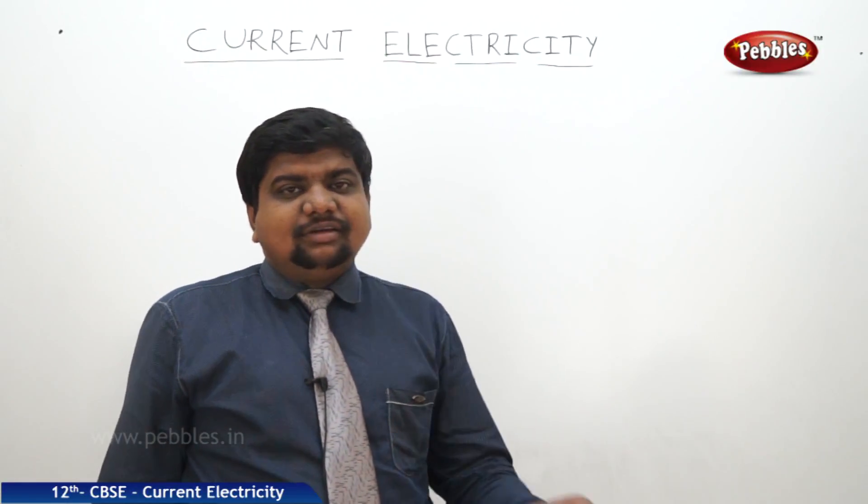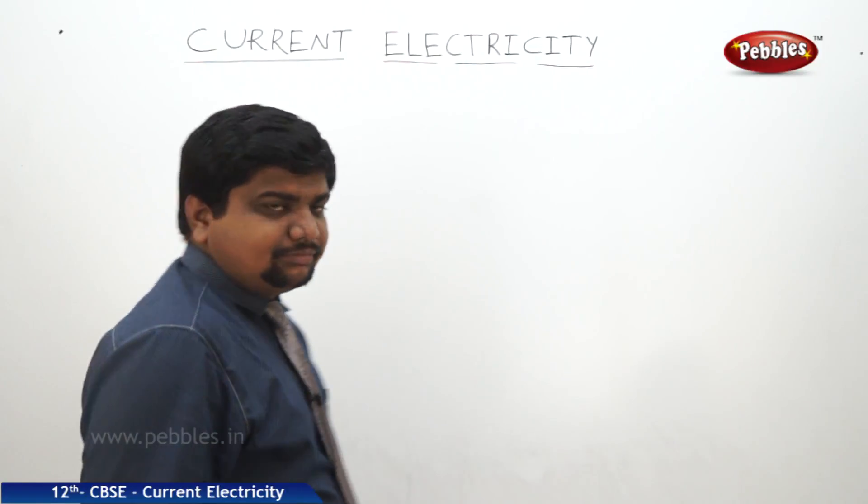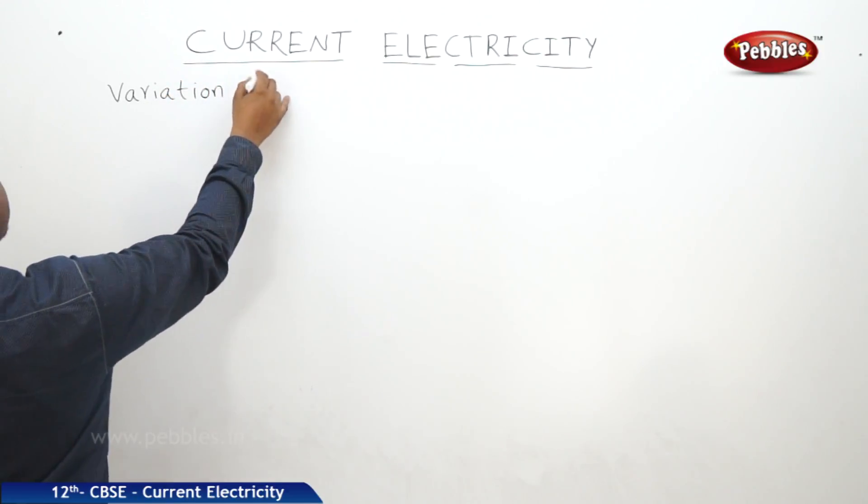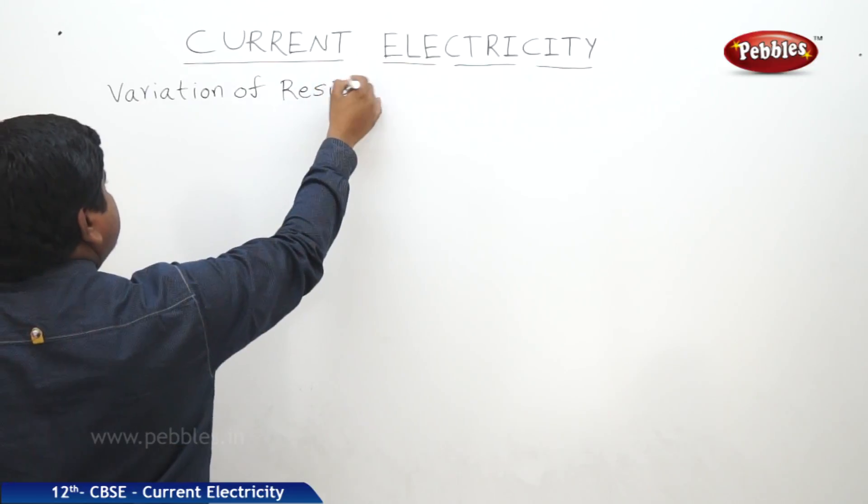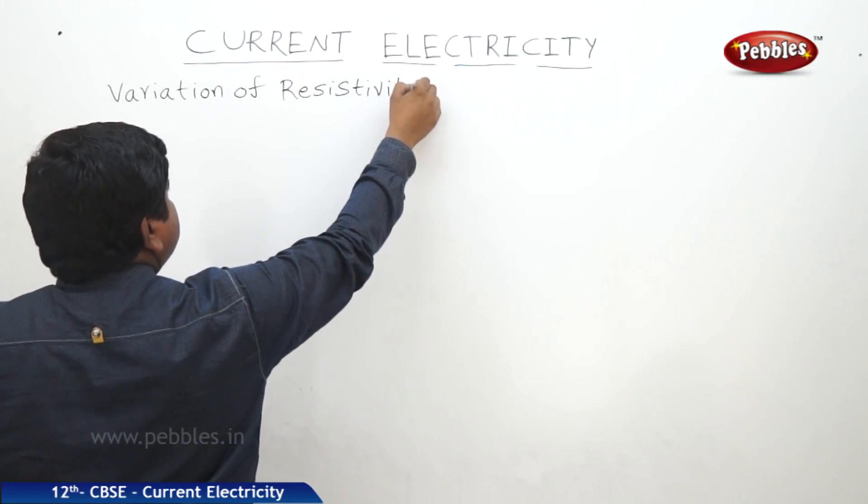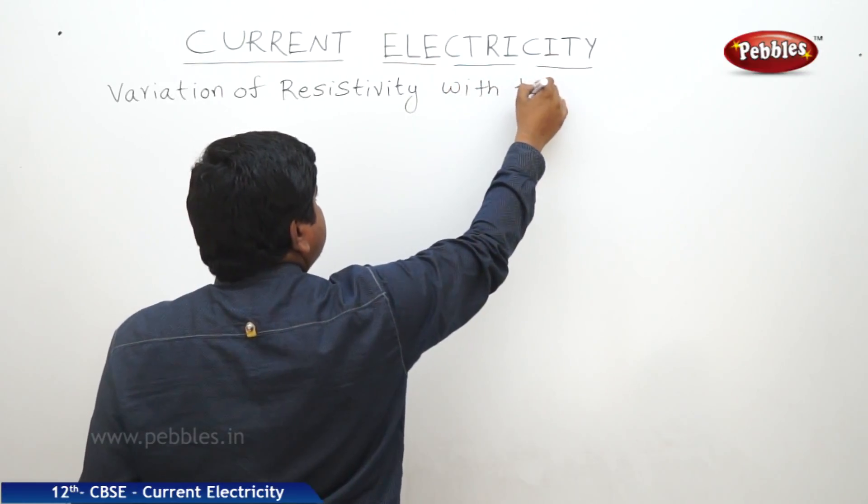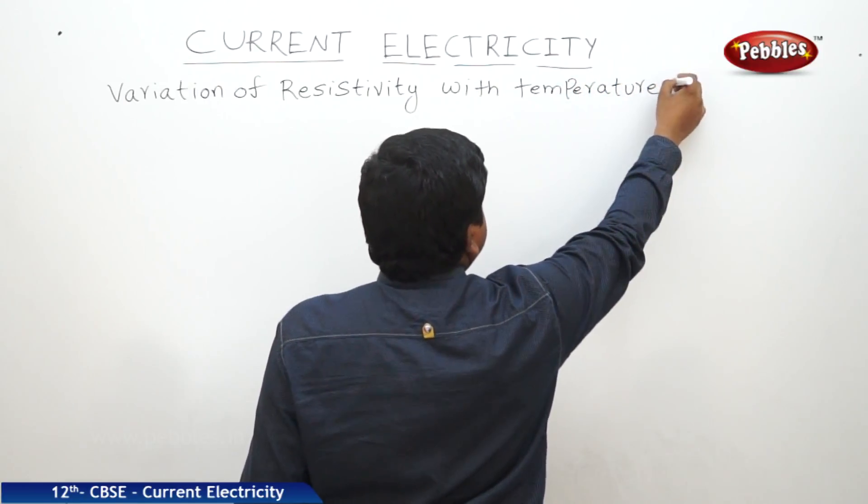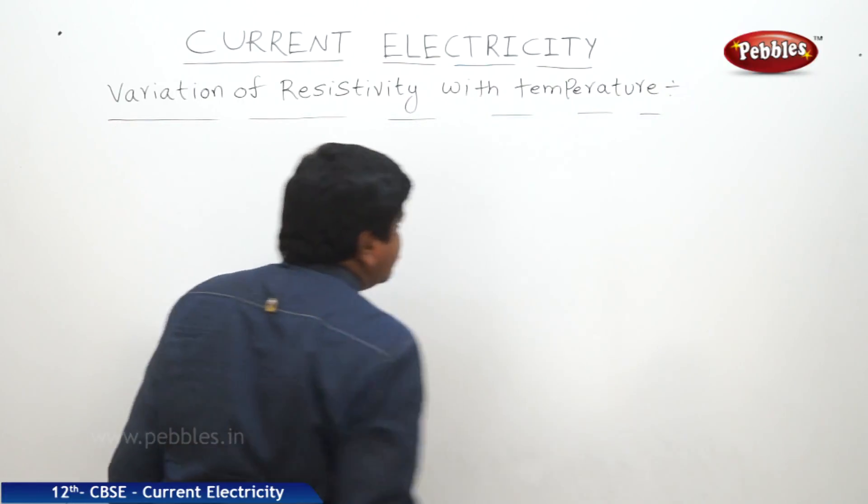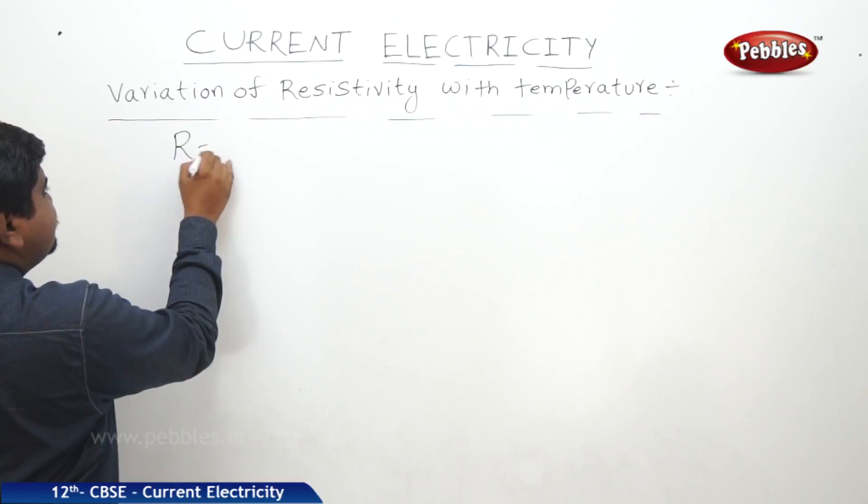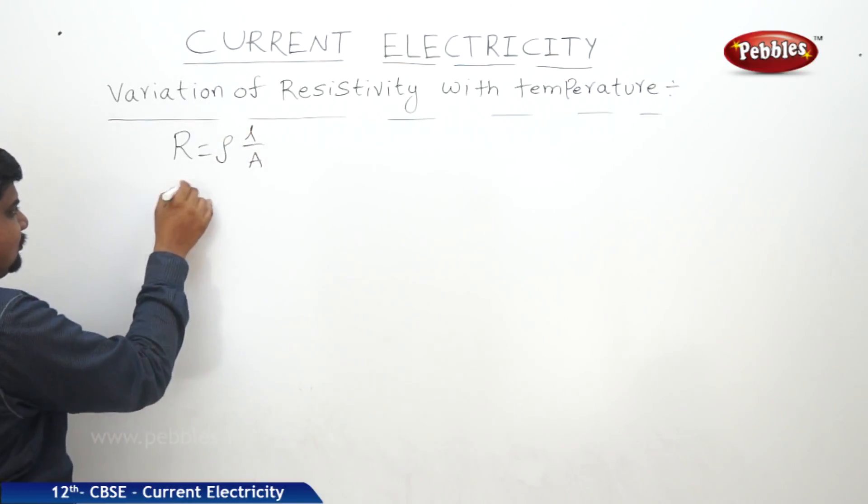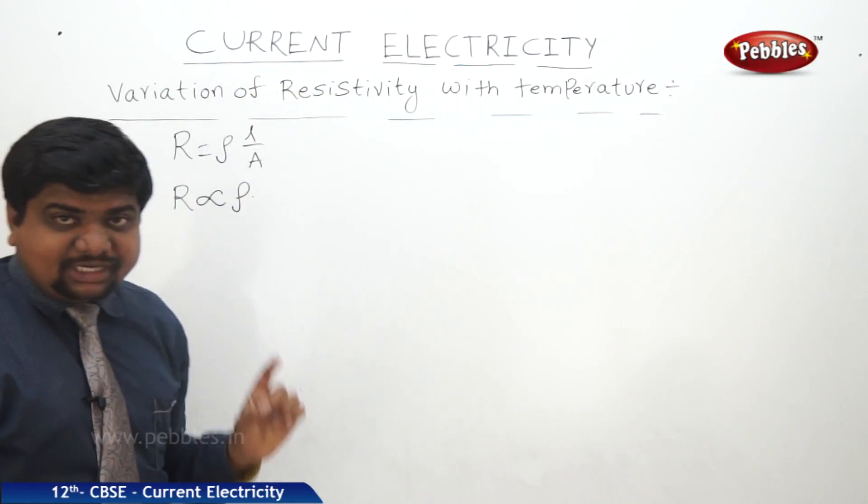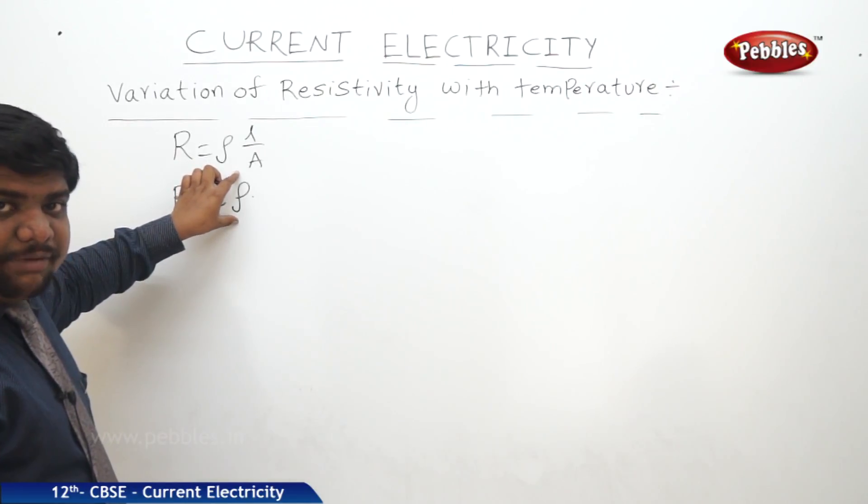The next concept is variation of resistivity with respect to temperature. We know that resistance is equal to ρL/A. From this relation we can write R is directly proportional to ρ. If R varies with respect to temperature, then ρ also has the same variation with respect to temperature.